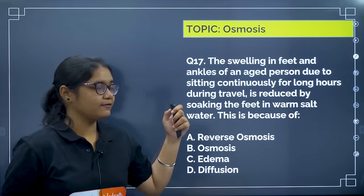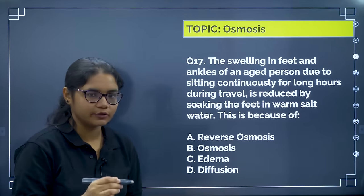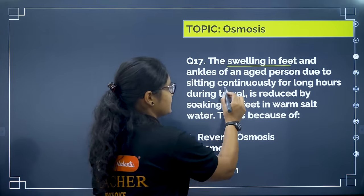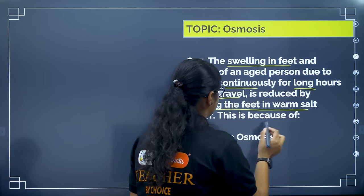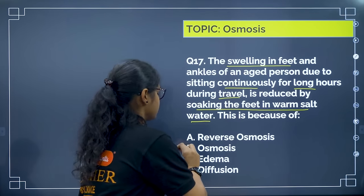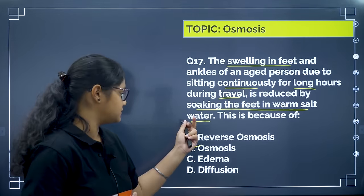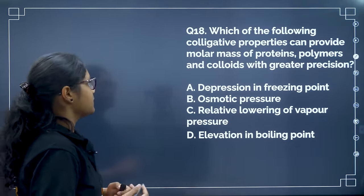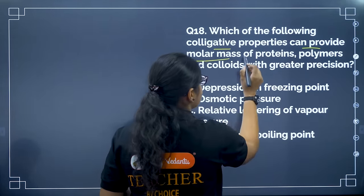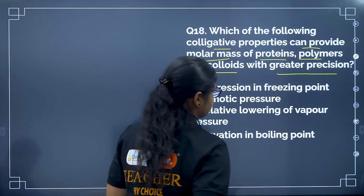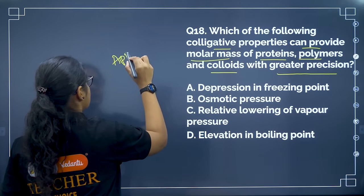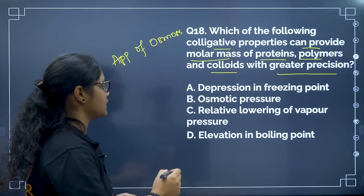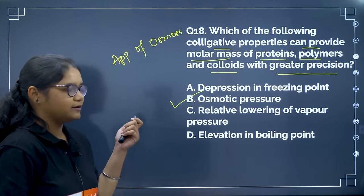Moving to osmosis questions. Swelling in feet and ankles during long travel is reduced by soaking in warm salt water — this is due to osmosis. Correct answer is option B. Next: which colligative property provides molar mass of proteins, polymers, and colloids with greatest precision? Osmotic pressure is used to calculate masses of macromolecules. Correct answer is option B — osmotic pressure. Both are direct theory-based questions.